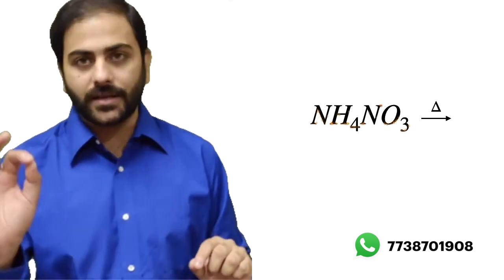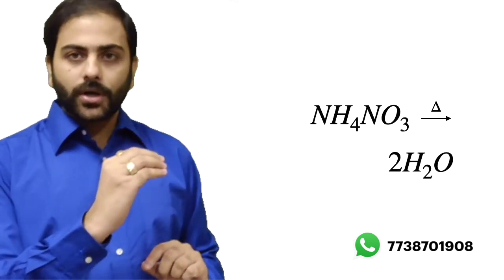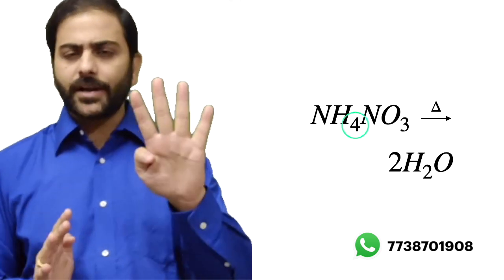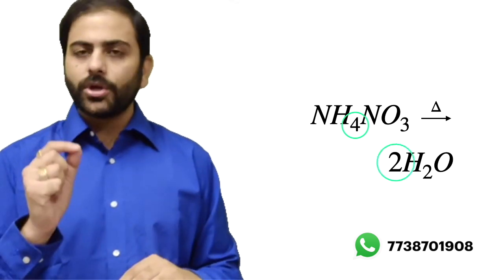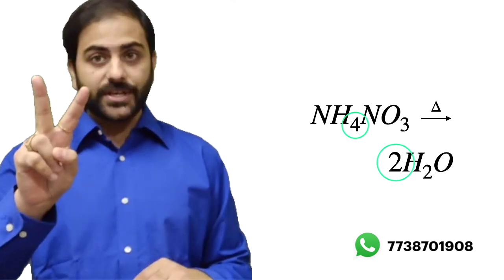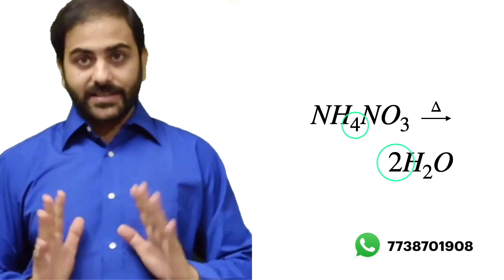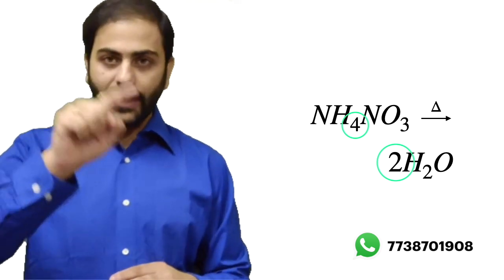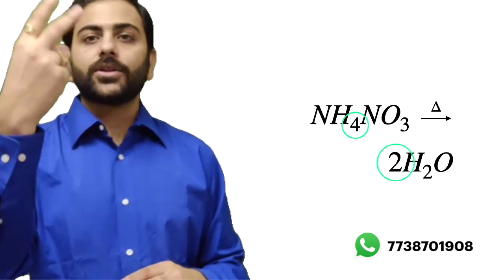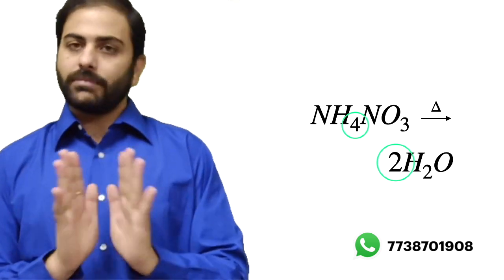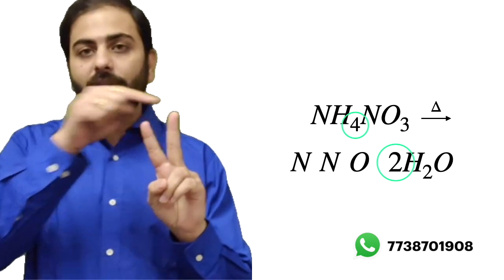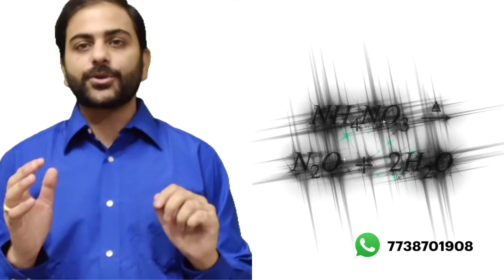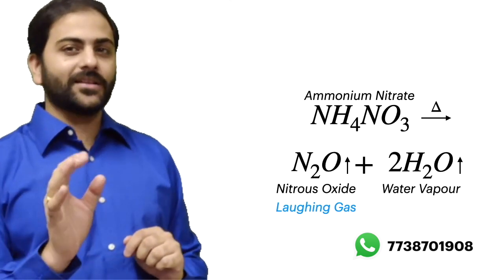How many water molecules can we remove? This depends on how many hydrogens are present — there are 4 hydrogens, so two water molecules (2H2O) can be liberated. Two water molecules use 2 oxygens on the product side, but NH4NO3 has 3 oxygens total on the reactant side. So after removing 2H2O, two nitrogen atoms and one oxygen atom remain.